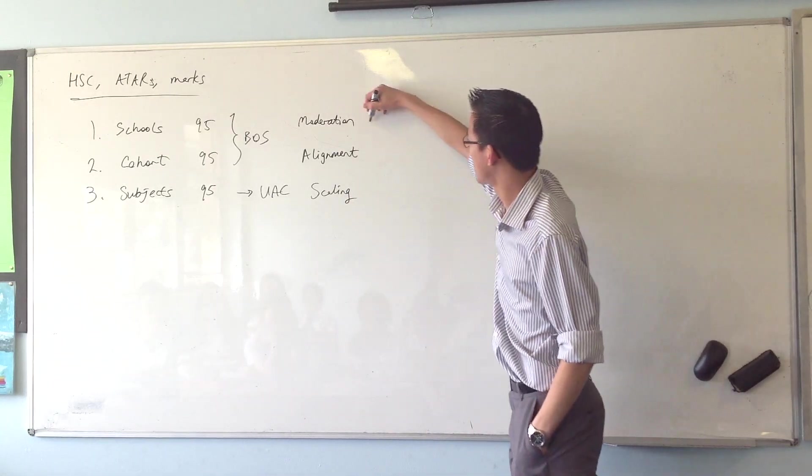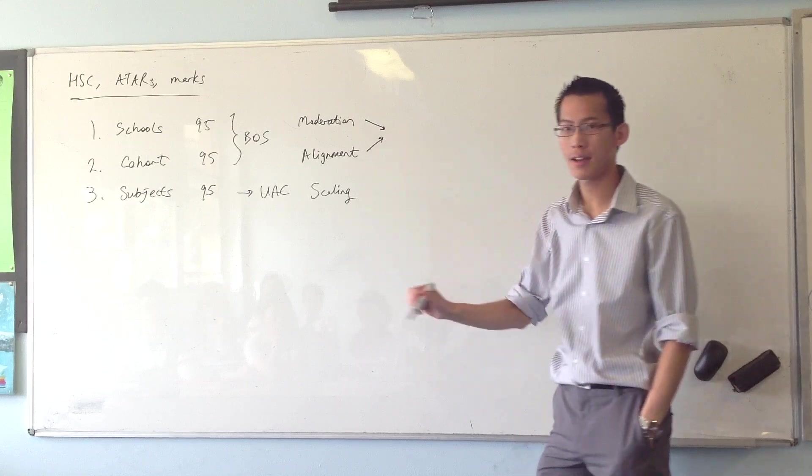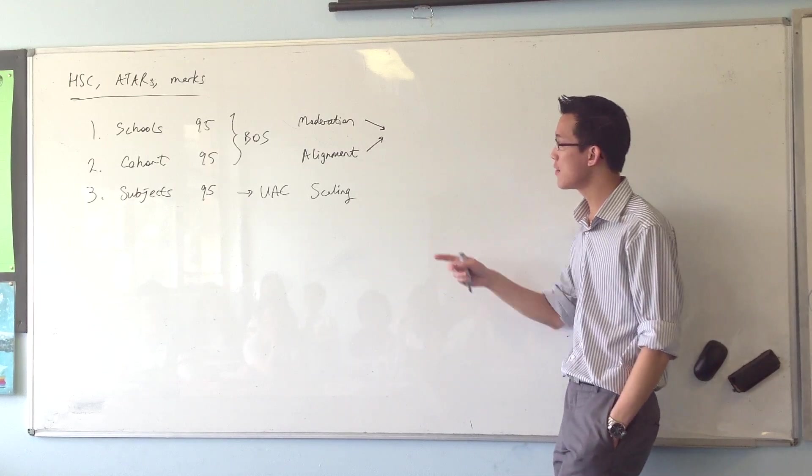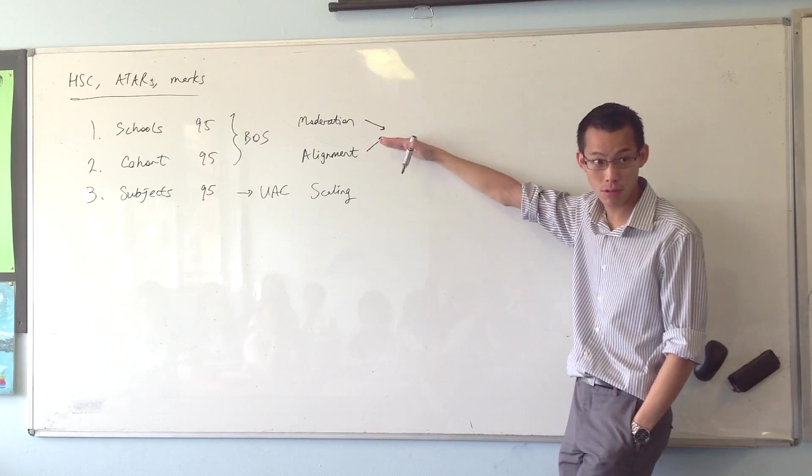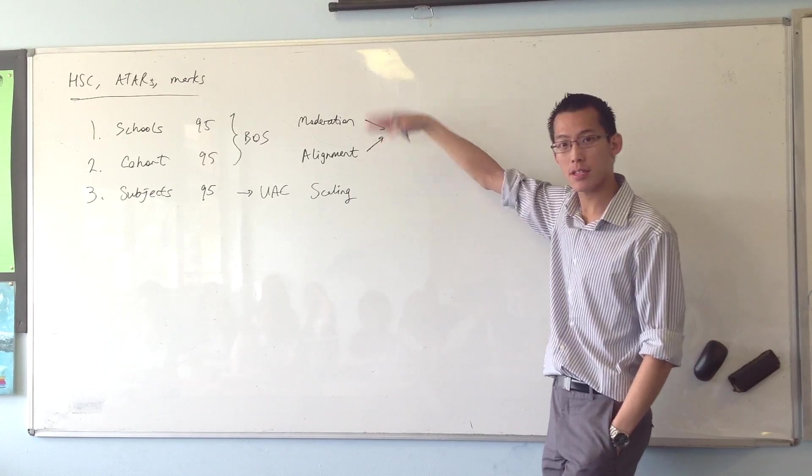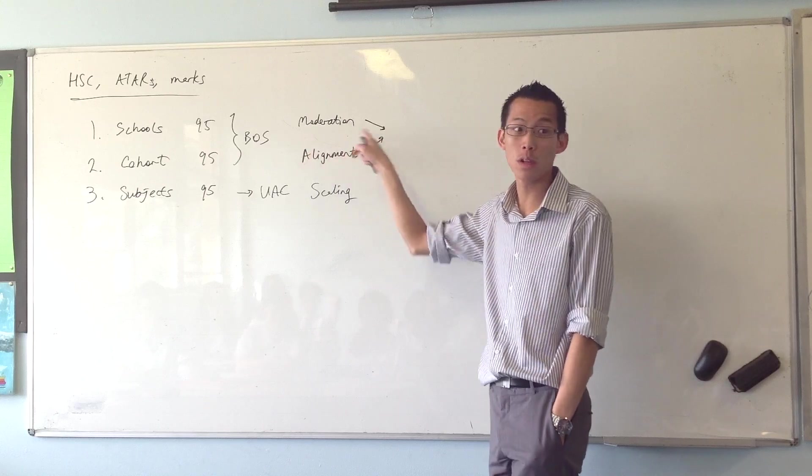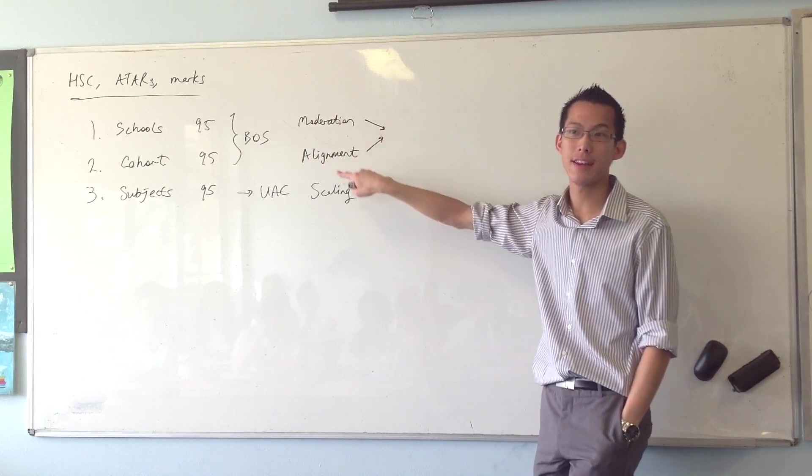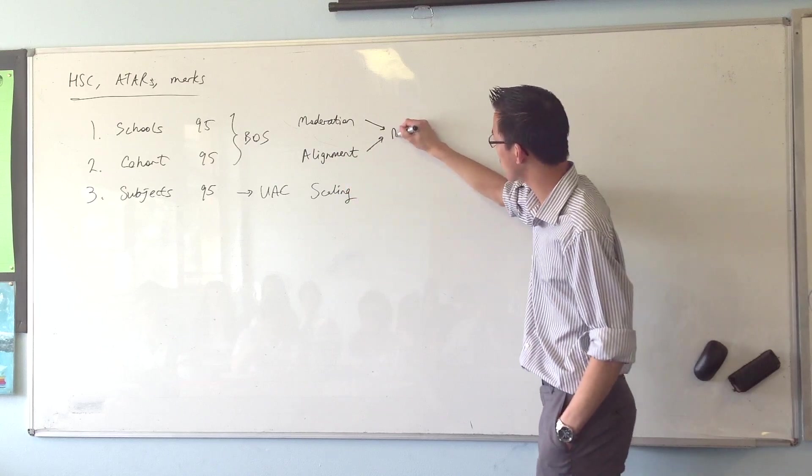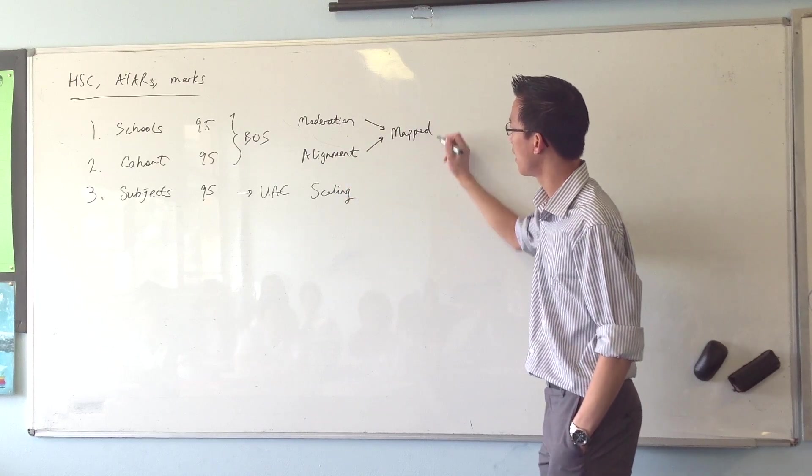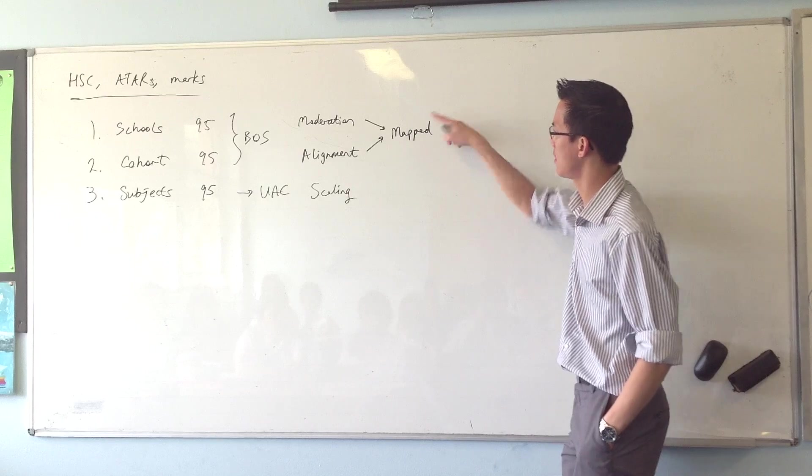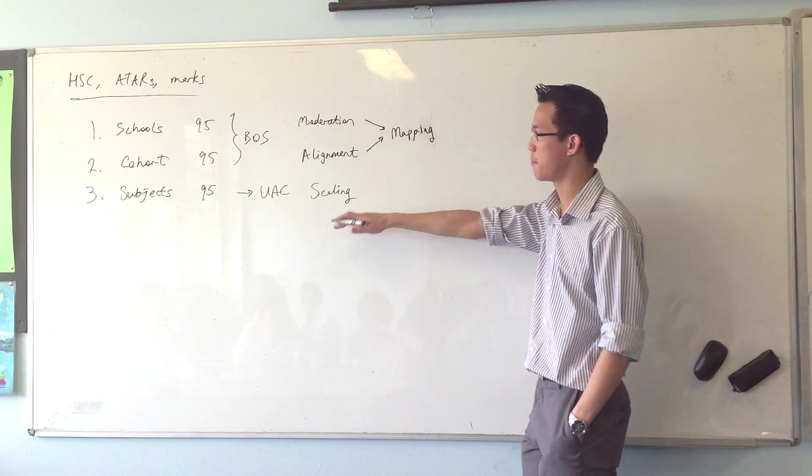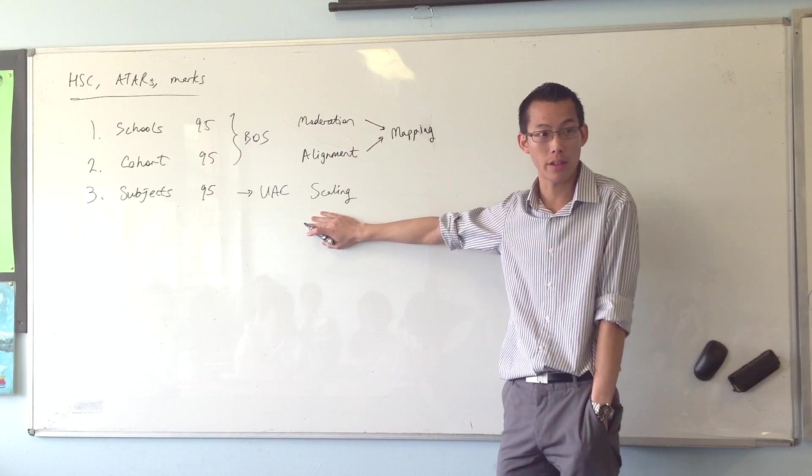Now, one more word for you. Sometimes these two processes, because they're done number one by the same group of people, and number two they're done together. So even though moderation happens and then alignment happens, you never see what happens in between here. The school doesn't see, we don't find that out. We just get the mark after it's been moderated and aligned. So often those two processes are called one. They're called mapping, basically. So the marks get mapped by Board of Studies, and then UAC scales them accordingly.